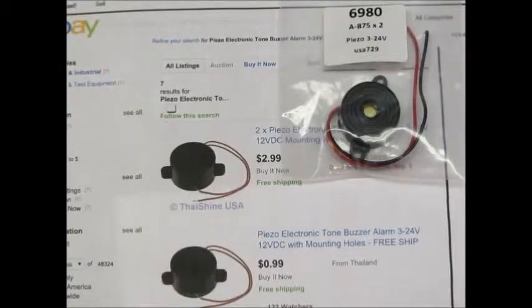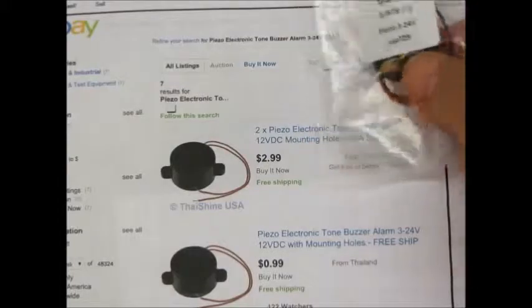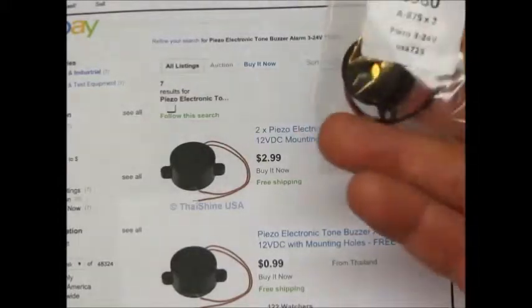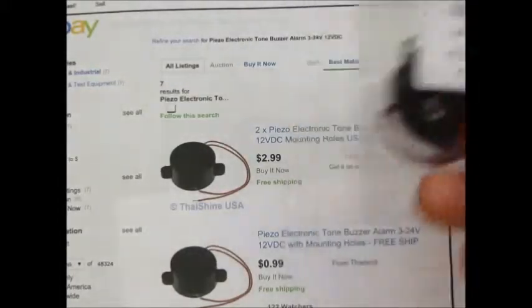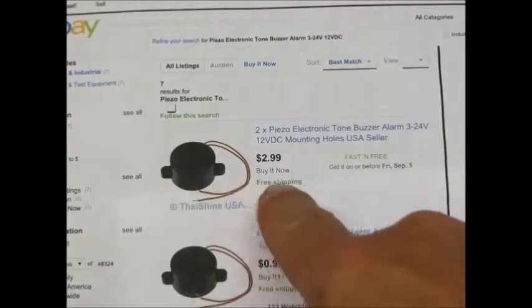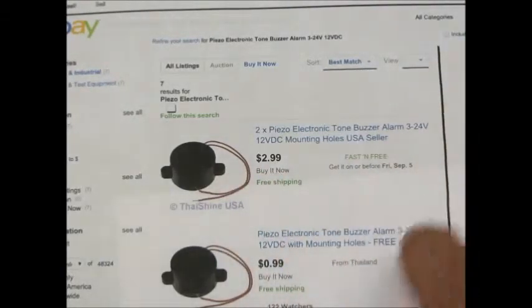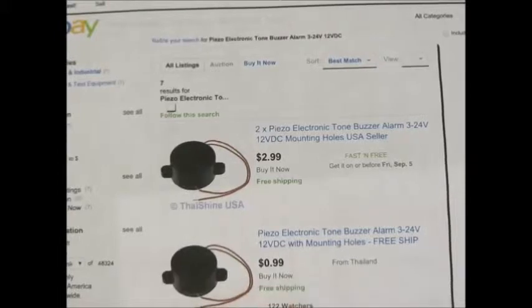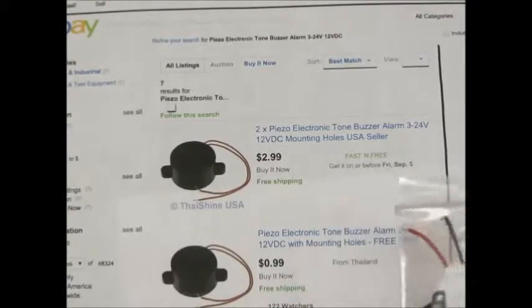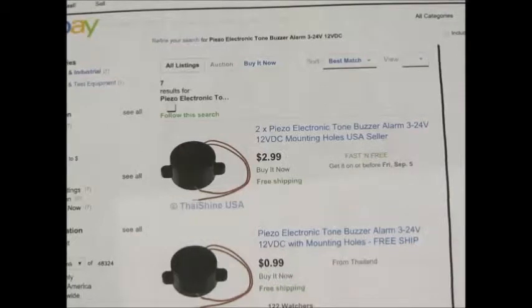For the components for making the low primer detector, one of the things I needed was a buzzer. These are really cheap on eBay, anywhere from $1 to $3 with free shipping. It takes probably two weeks to get them. They're usually shipped from China.